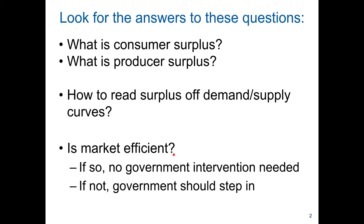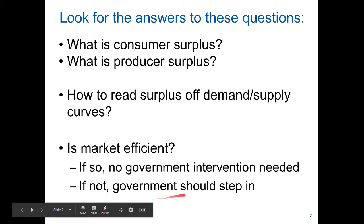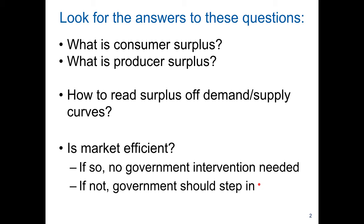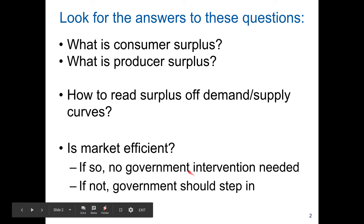However, if the market is not efficient, or the market has failures — it breaks down from time to time — then government intervention is justified, and the government should step in and improve the efficiency of the market. So in this chapter, we're trying to provide you with a framework to think about whether the market is efficient or not.